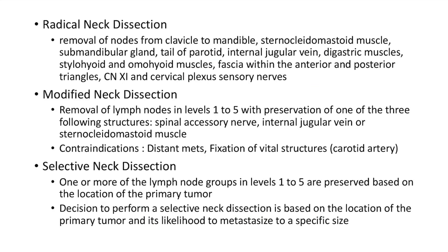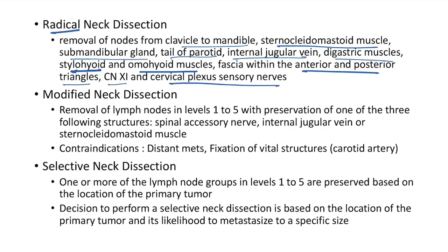Radical neck dissection involves removal of nodes from clavicle to mandible, including the sternocleidomastoid muscle, submandibular gland, tail of parotid, internal jugular vein, digastric muscles, stylohyoid and omohyoid muscles, fascia within the anterior and posterior triangles, spinal accessory nerve, and cervical plexus sensory nerves.